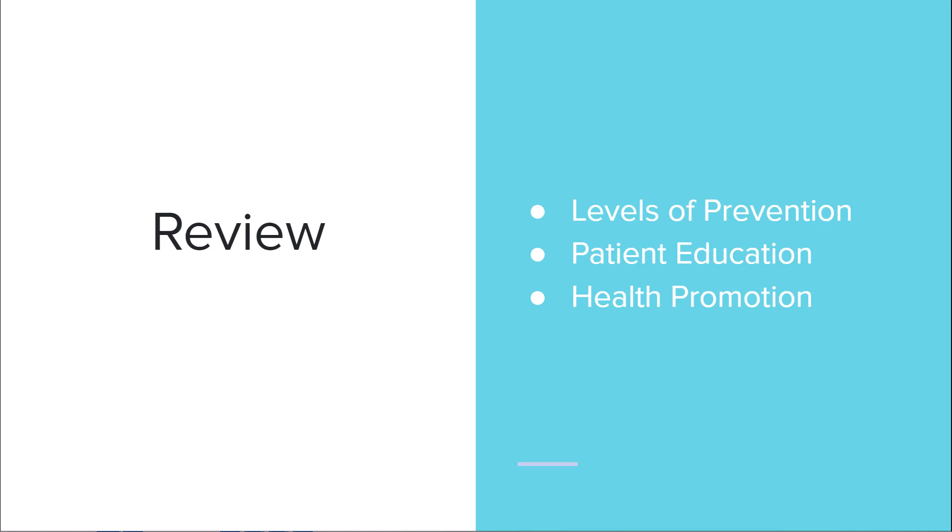Quick review: there are three levels of prevention — primary stops disease before it starts, secondary returns people to a state of health, and tertiary helps them cope with and minimize loss. Patient education is critical because patients can't make healthy changes without understanding. Health promotion takes these two concepts and combines them to promote all types of health through education and prevention.